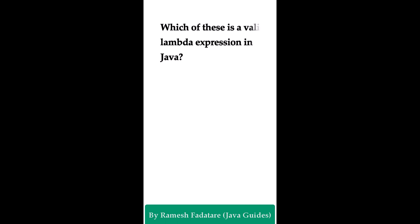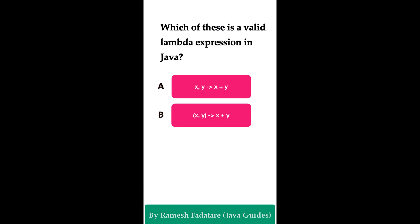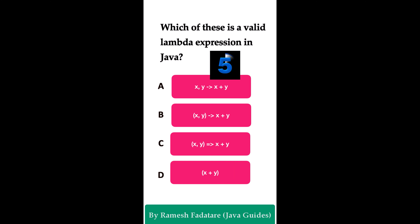Which of these is a valid lambda expression in Java? Option A: x, y -> x + y. Option B: (x, y) -> x + y. Option C: x, y => x + y. Option D: x + y. The correct answer is option B: (x, y) -> x + y. When a lambda expression has more than one parameter, the parameters must be enclosed in parentheses, followed by the arrow operator (->), then the lambda body. Option A is incorrect because there are no parentheses; option C is incorrect because the arrow operator is missing; option D is also incorrect.